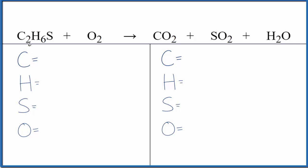Let's count the atoms up. Two carbons, six hydrogens, one sulfur, and two oxygens in the reactants. In the products, we have one carbon, two hydrogens, one sulfur, and we have a lot of oxygens. We need to count all these up. Two plus two plus the one here, that gives us five oxygen atoms.